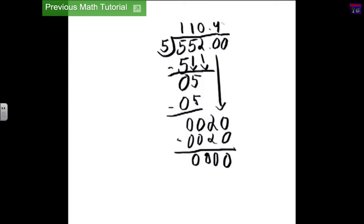So, can 5 go into 0? No, it can't. So, you bring down this 0. So, you add a 0 here to show that it can't go into 0.